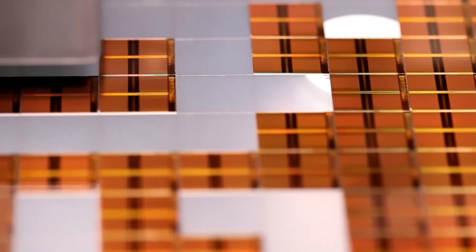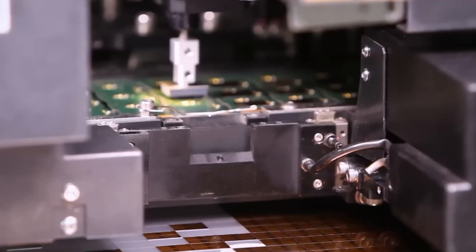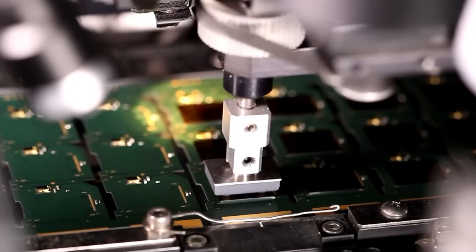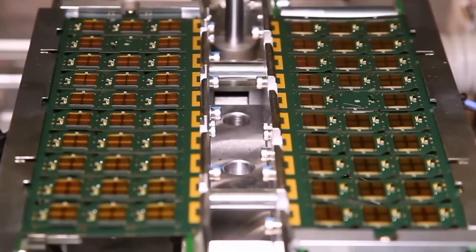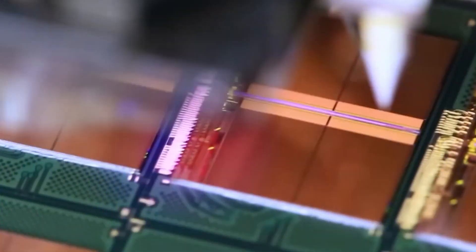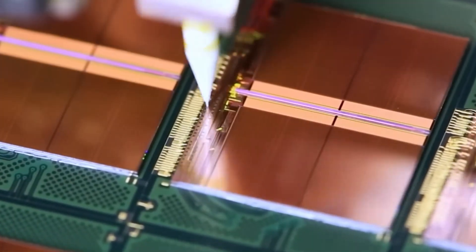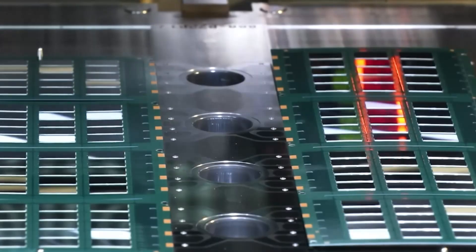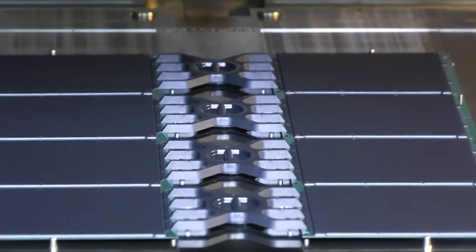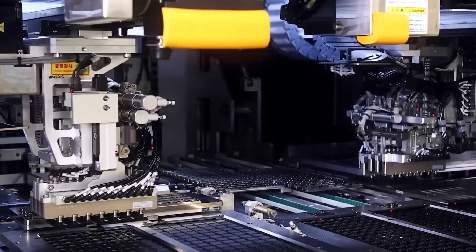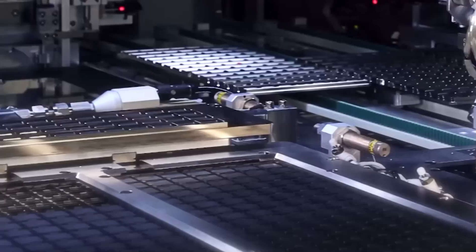This is where the assembly phase takes over, and automation shines. Robots, guided by advanced vision systems, pick up each delicate chip and carefully bond it to its package. Think of the packaging as the chip's protective armor, designed to shield it from physical damage while enabling seamless connections to external devices. But this isn't just about protection. The package also houses the electrical pathways that allow the chip to communicate with the world.